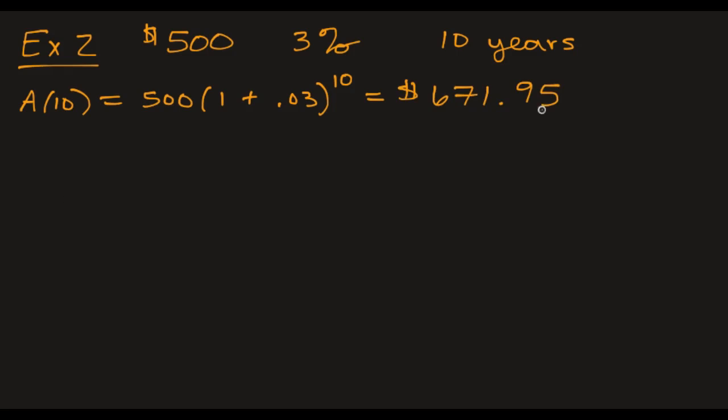So there we get $671.95. Now let's find it if we compound it monthly. So we have $500, 1 plus 0.03 divided by 12 to the 10 times 12. And I'm going to go ahead and write down the remaining ones.